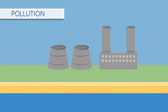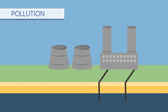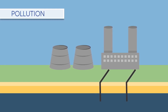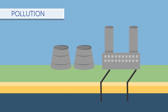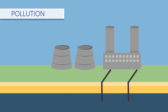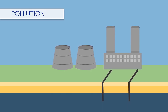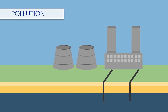Human activities are polluting the air and water. Toxic discharge into water from industrial processes has a negative effect on local aquatic species, by killing, weakening or affecting their ability to reproduce.